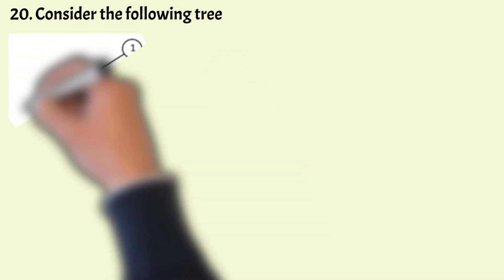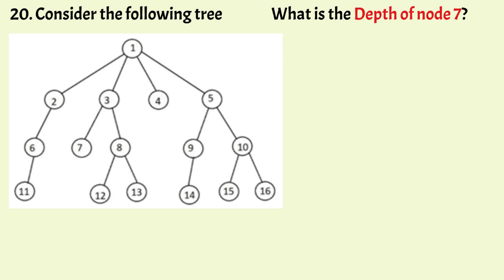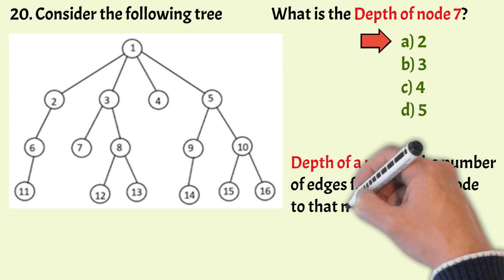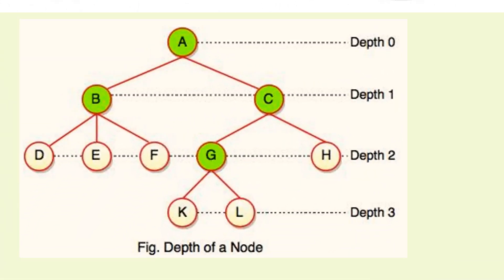Coming to the last question in this series. Considering the following tree, what is the depth of node 7? The options are: 2, 3, 4, and 5. The correct option is Option A, that is 2. The depth of a node is the number of edges from the root node to that node. In this example, the depth of A is 0, B and C is 1, and G is 2.